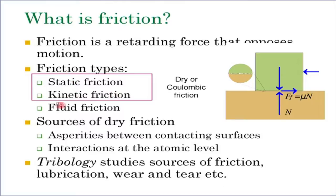Friction is of two types: static friction and kinetic friction, and also fluid friction. Fluid friction is not the topic of this course. What we will extensively discuss is static friction and kinetic friction. Sources of friction — in a very naive way we can say it is asperities between the contacting surfaces that cause friction. Strictly speaking, friction is not a very well understood question. It is still a topic of extensive modern research; there is an entire field called tribology which studies sources of friction, lubrication, wear and tear.